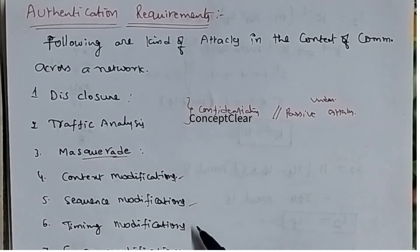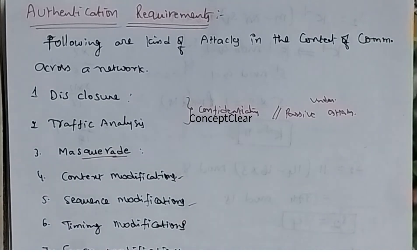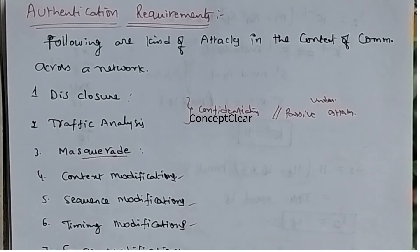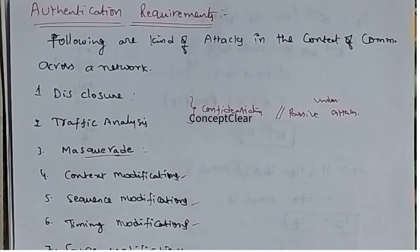Next is timing modification. Timing modification means disturbing the message delivery timings — like a delay in message delivery, or replaying messages where the message is repeatedly sent from sender to receiver. That is called timing modification.